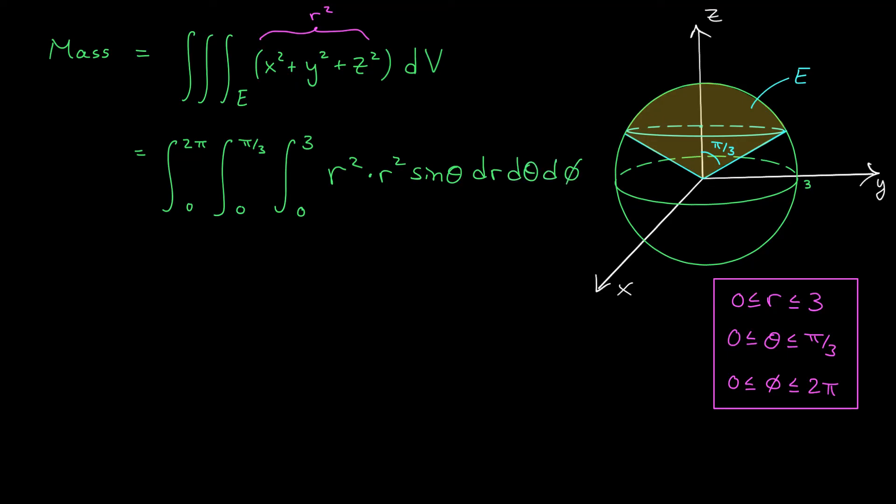The hard work is done. Now we'll wrap up this problem by evaluating our integrals. Our conversion to spherical coordinates actually made our integral very nice. Our bounds are all constants, and our function splits up nicely into an r part, a theta part, and a phi part, which is just 1. So we can actually break up our three integrals. We have the integral from 0 to 2π, dφ. The integral from 0 to π/3, sin θ, dθ. And the integral from 0 to 3 of r to the 4, dr.